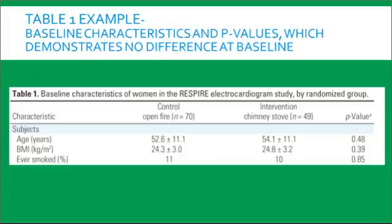In clinical trials, it's really important to take a look at Table 1, which is typically the baseline characteristics. When we randomize people into different groups, we expect that it evens out all characteristics, and that the two groups are essentially very similar or the same. For example, in this table we see that age in the control group is 52.6 plus or minus 11.1, and in the intervention group the age is 54.1 plus or minus 11.1, and the p-value is not statistically significant, indicating there is no difference in age between the two treatment groups.